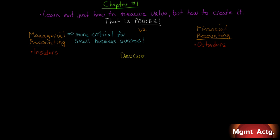Those outside the organization — who are they, and what kind of decisions do they need to make? Well, they tend to be investors and creditors. People who buy the equity of a company and people who lend money to a company have to make the right decisions based on the financial information that's available. Hence, financial accounting provides that.